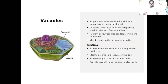Vacuoles are single-membrane sacs filled with liquid containing water, sugar, and ions. In animal cells, vacuoles are temporary, small in size, and few in number. In plant cells, vacuoles are large and more numerous. They may be contractile or non-contractile. Functions include storing various substances including waste products, maintaining osmotic pressure of the cell, storing food particularly in amoeba cells, and providing turgidity and rigidity to the plant.